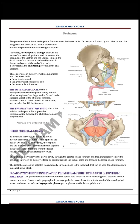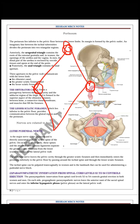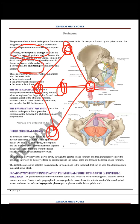The perineum is diamond-shaped. Anteriorly is the symphysis pubis, on both sides are the ischial tuberosities, and posteriorly is the sacrum. The perineal body is in the center. A transverse line divides it into the anterior urogenital triangle and the posterior anal triangle. The layers from skin inward are: skin, Colles' fascia, superficial perineal pouch, perineal membrane, deep perineal pouch, pelvic fascia lining the urogenital diaphragm, the urogenital diaphragm itself, endopelvic fascia, and the peritoneum.